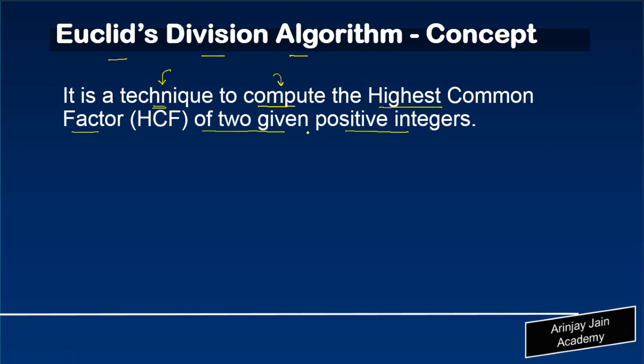This basically means you can calculate the highest common factor of two positive integers by using this particular algorithm and it's particularly helpful where the numbers are large. So let's say for example I tell you to calculate the highest common factor of 1365 and 126. One method could be you do the factorization and you find out the answer.